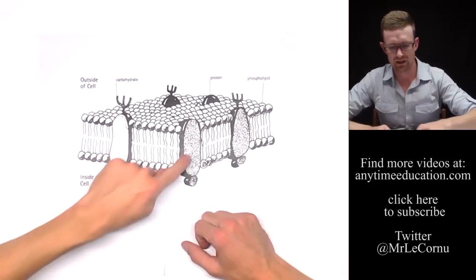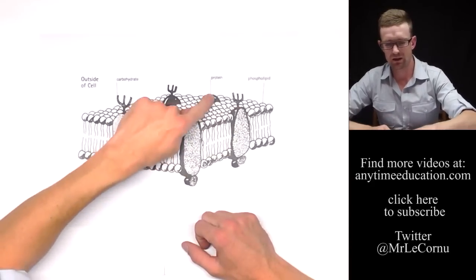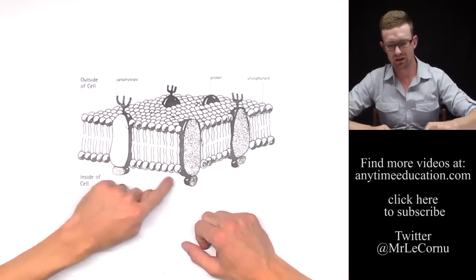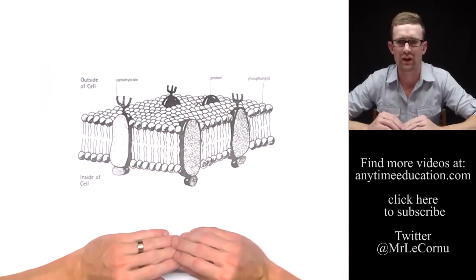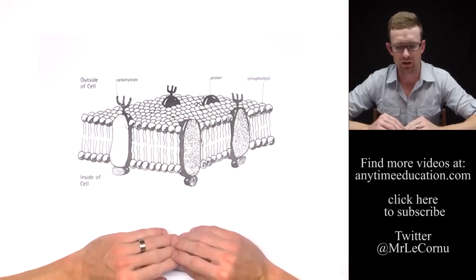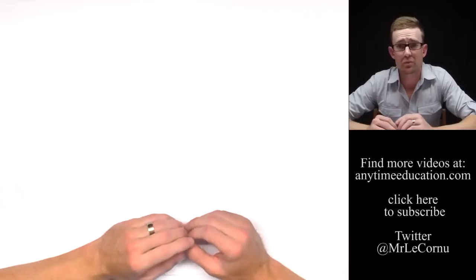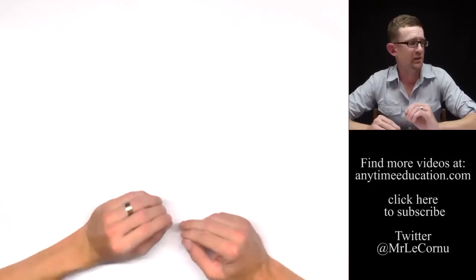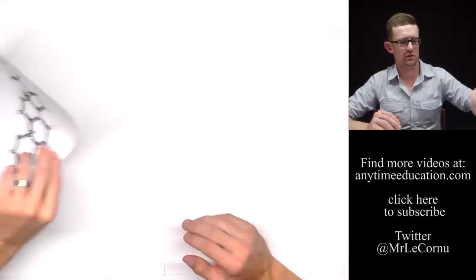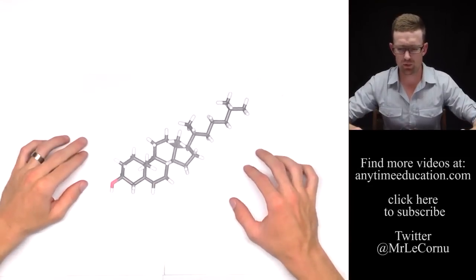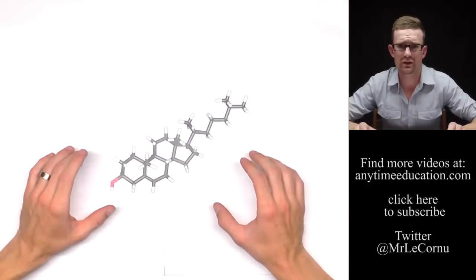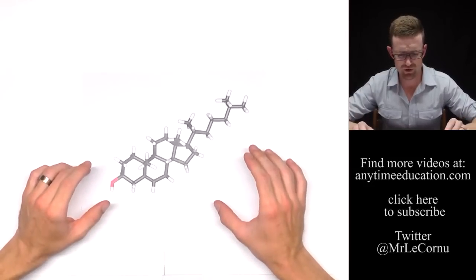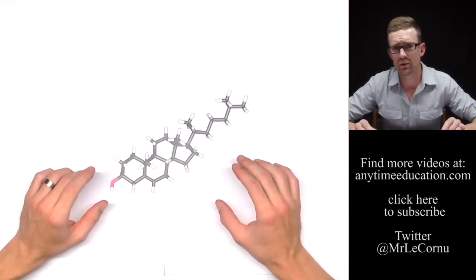Of course the other components that you see here in the cell membrane are proteins, and some of those proteins have carbohydrates attached, but there'll be more on that in our cell membrane video. Another type of molecule that I want to talk to you about is cholesterol. This is a cholesterol molecule here. Cholesterol is a lipid related compound and we find cholesterol in animal cell membranes.